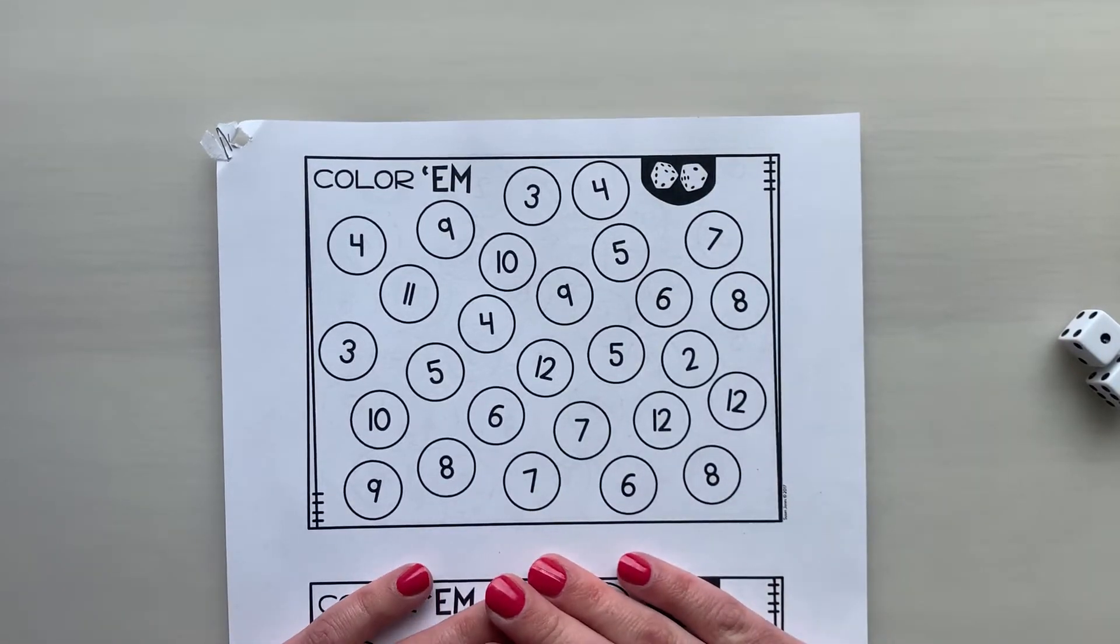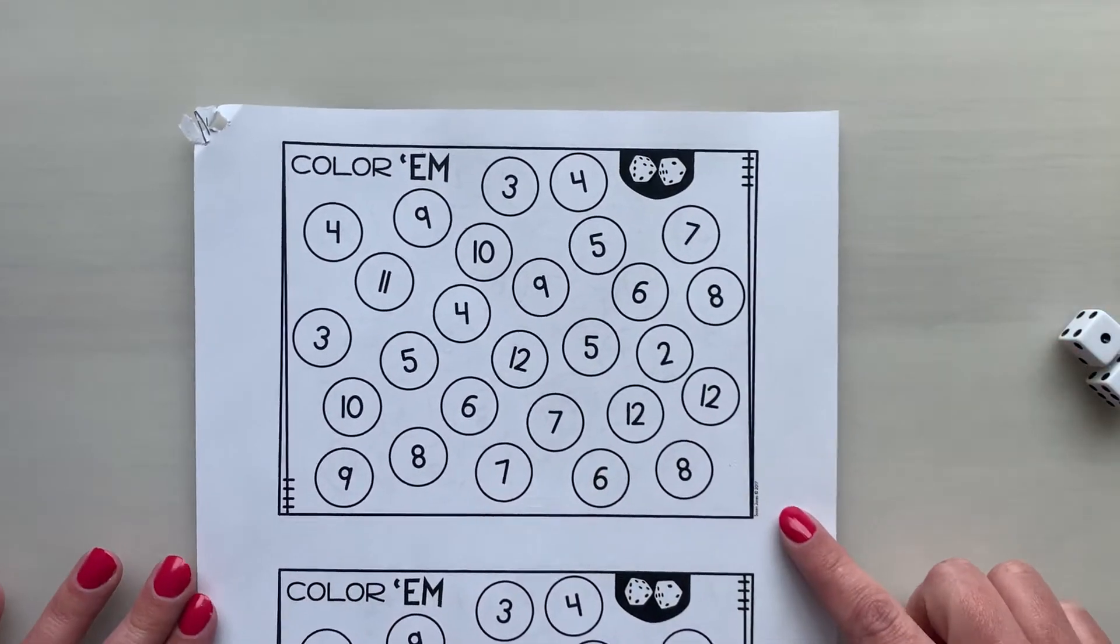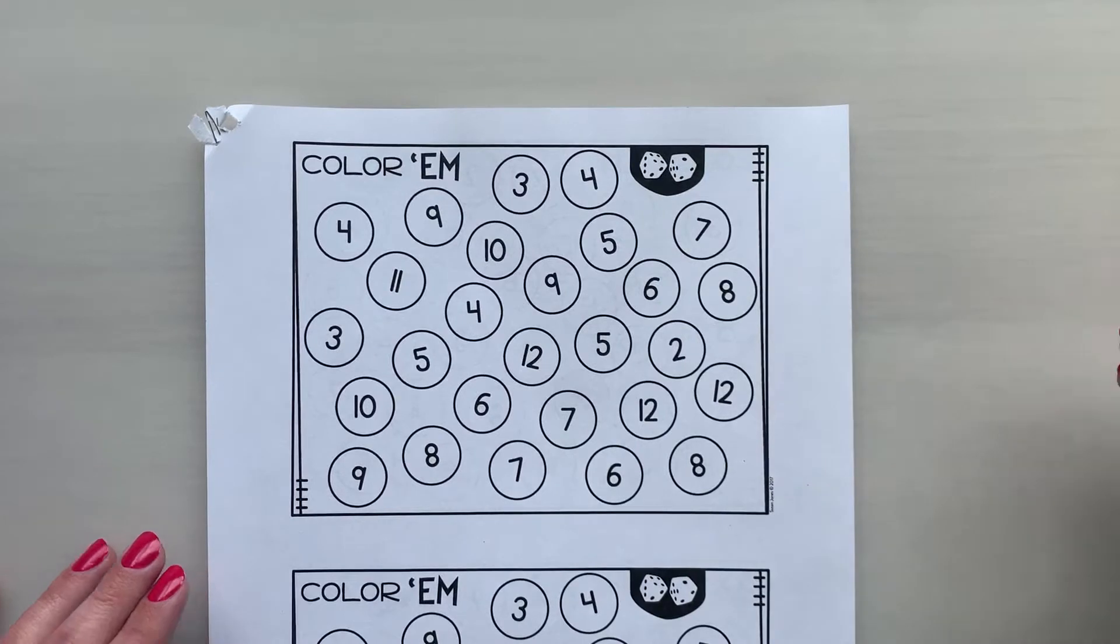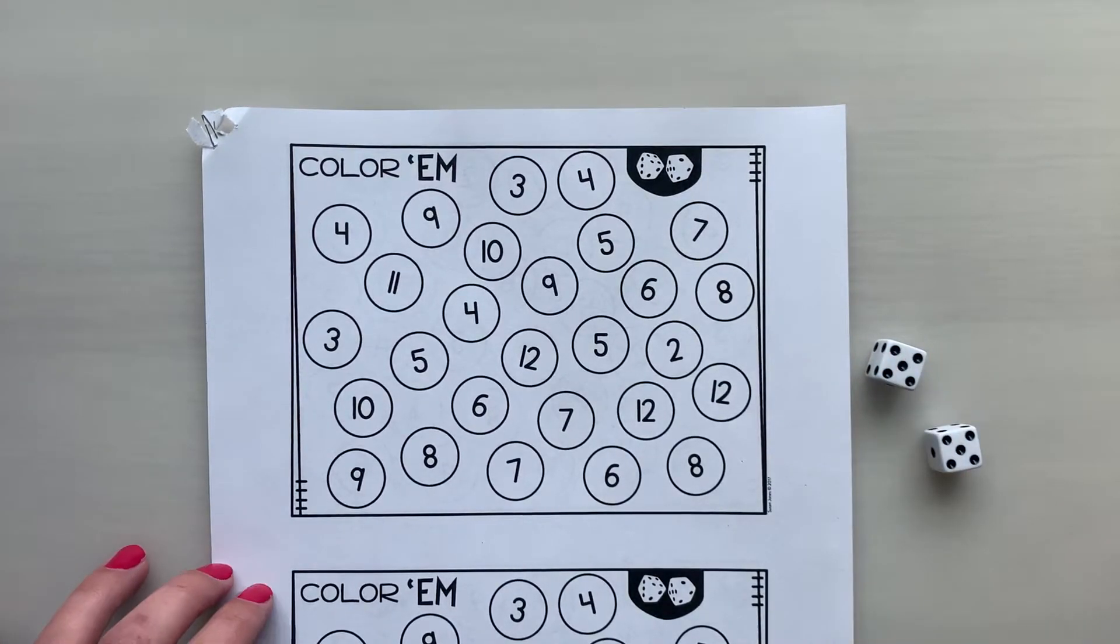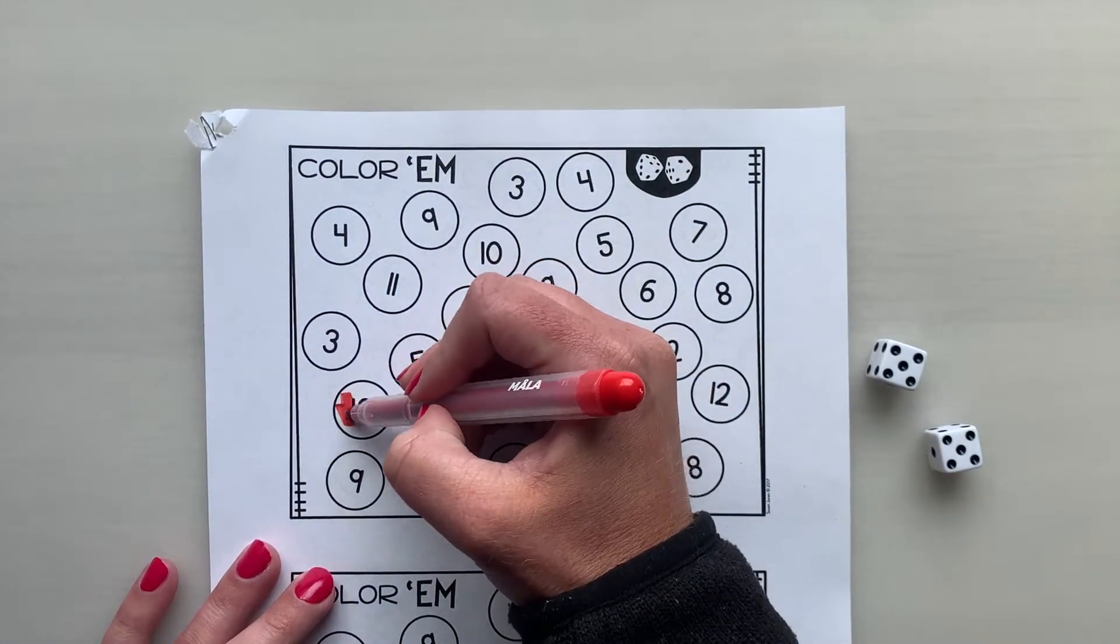So you don't need this bottom section right now, that's just if you want to play again. So player number one would roll their dice. Five plus five is ten. So I'm going to look around and color in the ten on my game board.